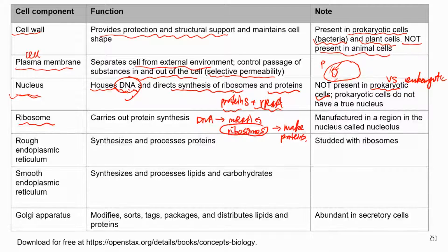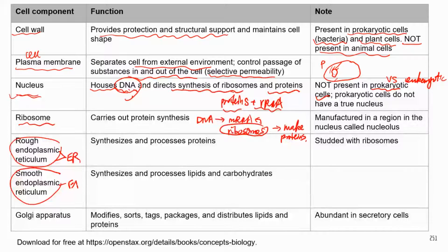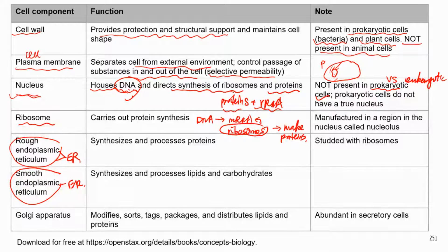The next structure is called the endoplasmic reticulum, divided into two groups: rough endoplasmic reticulum (rough ER) and smooth ER. They look very different and perform different functions. The rough appearance of rough ER is because ribosomes are attached to it, giving it a studded appearance. Rough ER is responsible for protein synthesis, and proteins go through rough ER to be further processed.